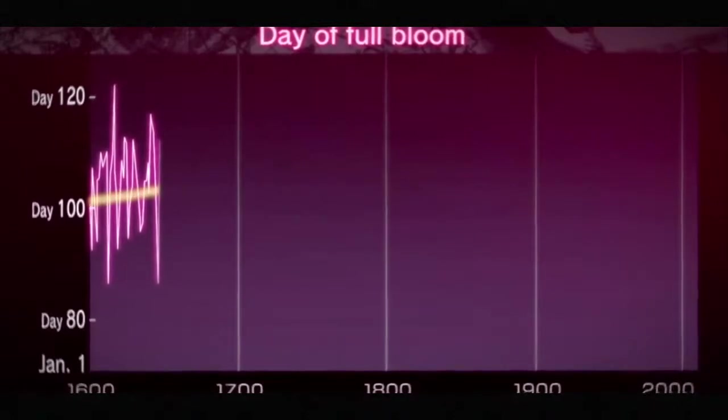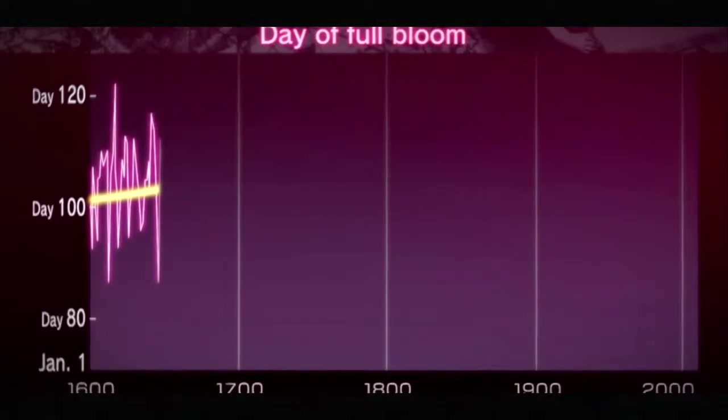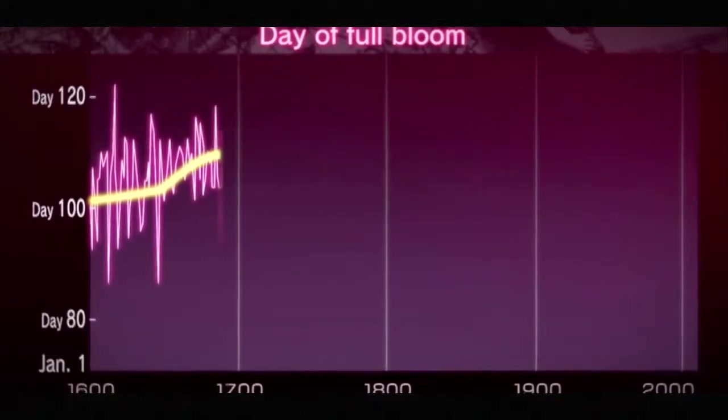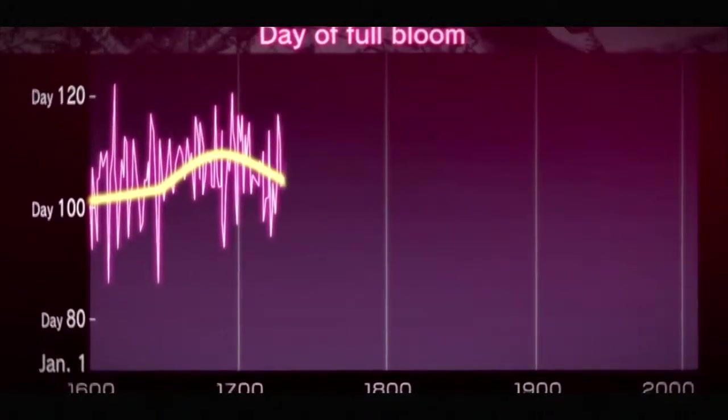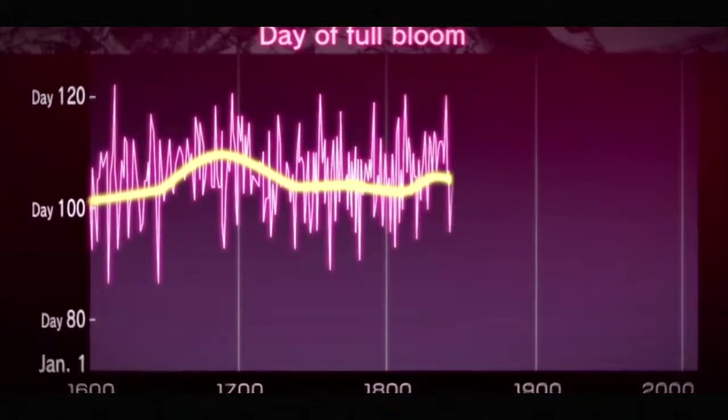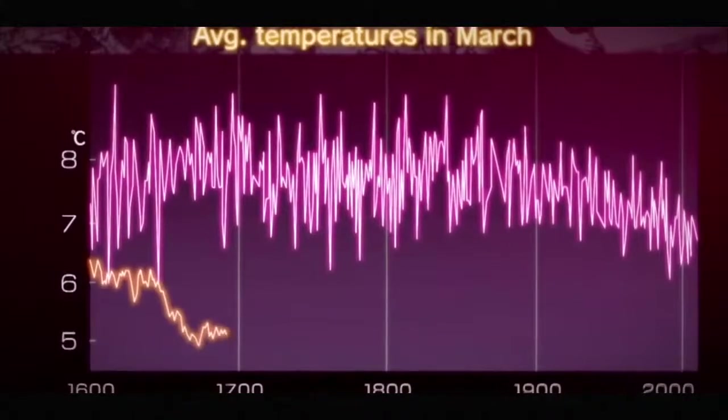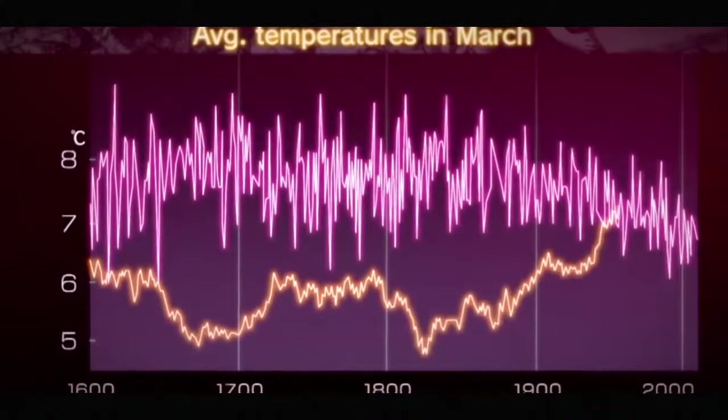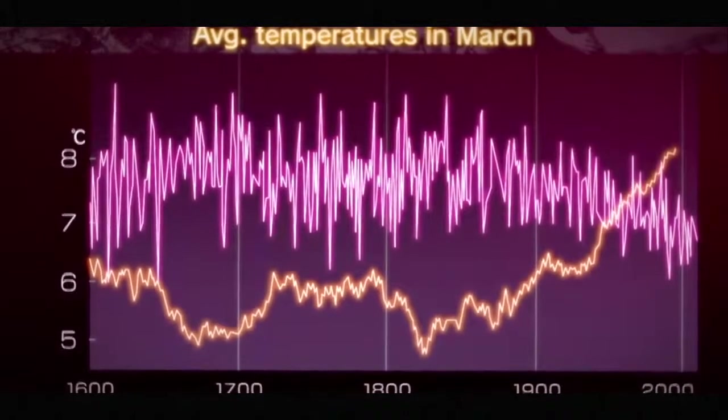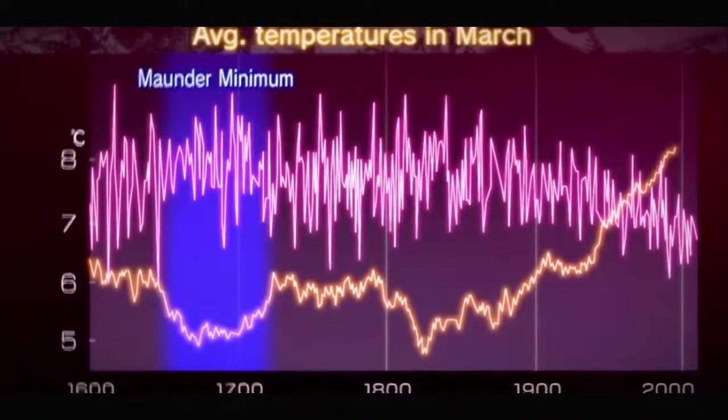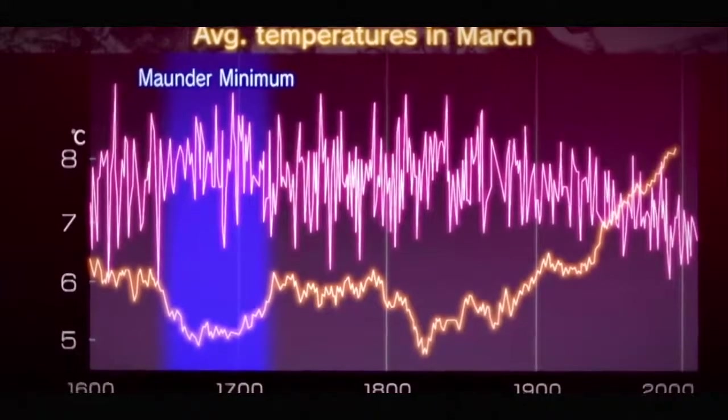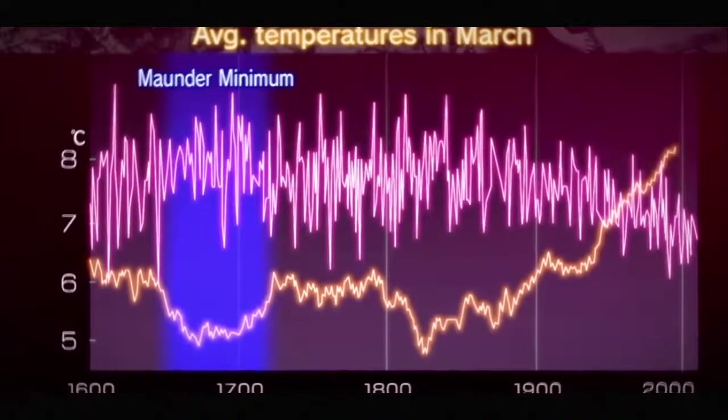The research showed that in the early 1600s, cherry trees were in full bloom about 100 days after January 1st. But by the late 1600s, the day of full bloom came more than 10 days later than this. Using this data, Aono was able to compute the temperatures at the time. This showed that during the 70-year Maunder Minimum period, the average temperatures were nearly 2 degrees lower.